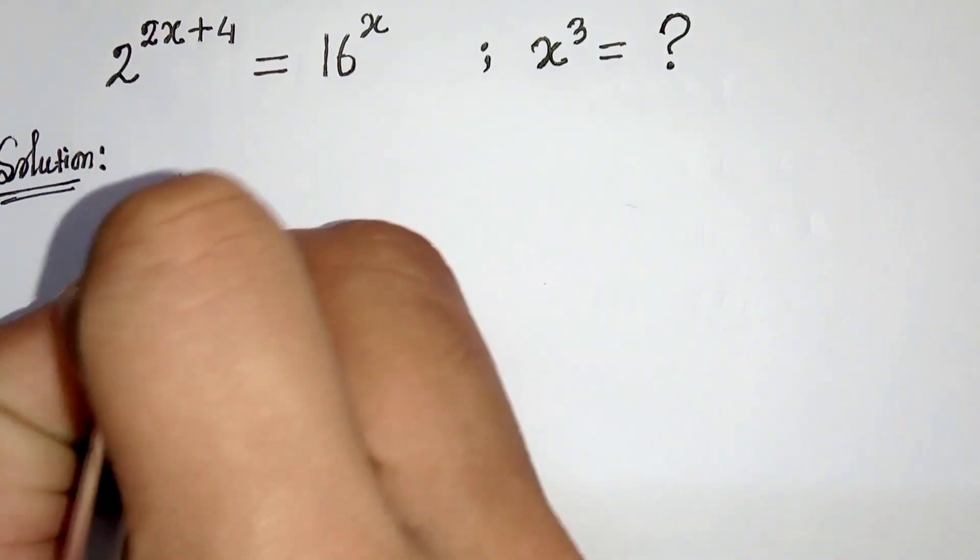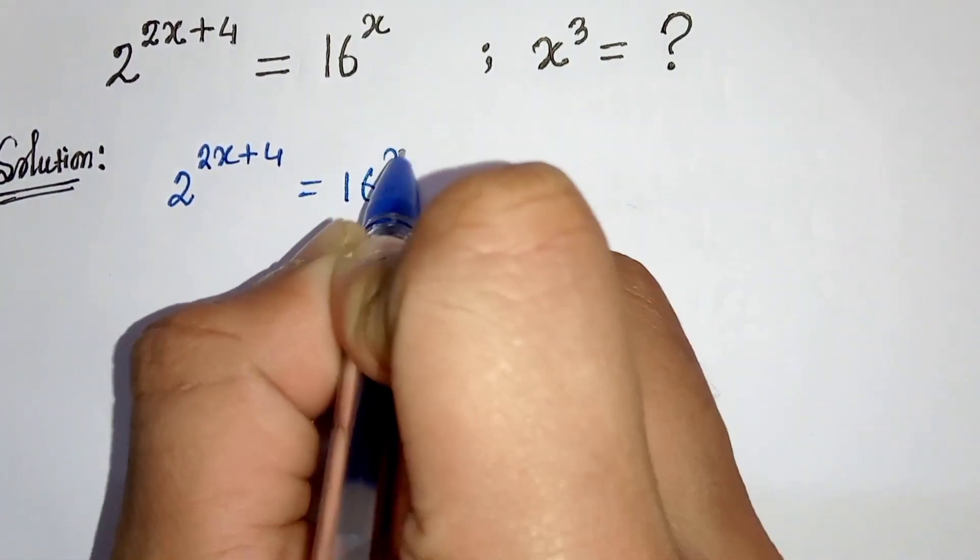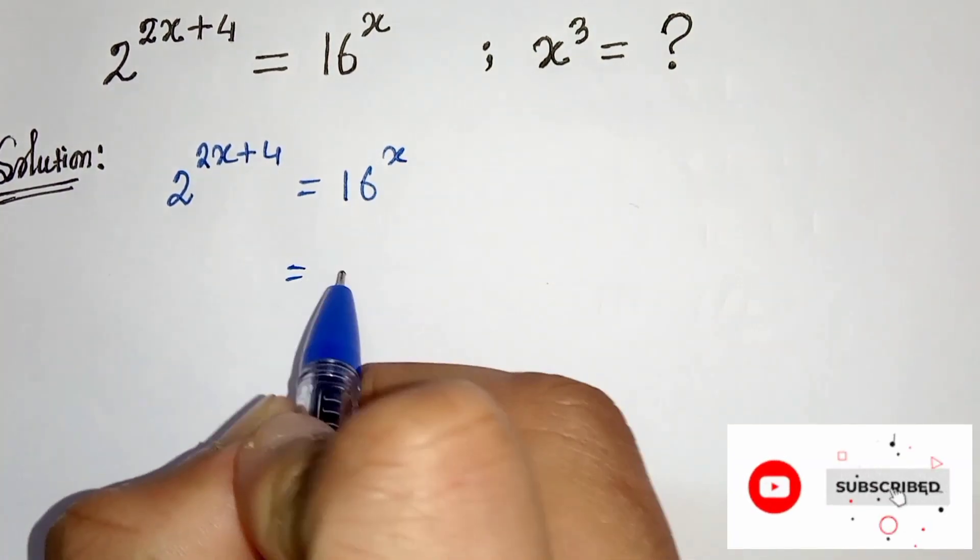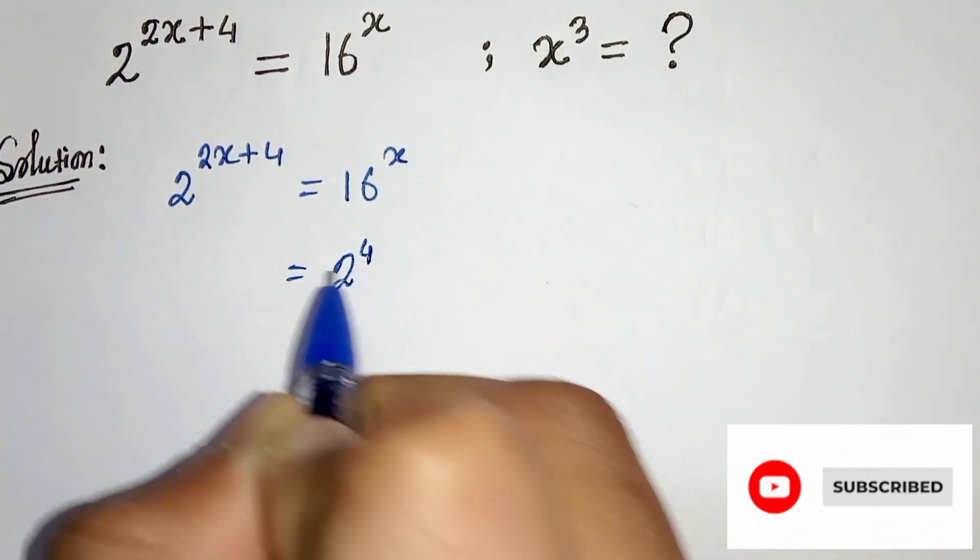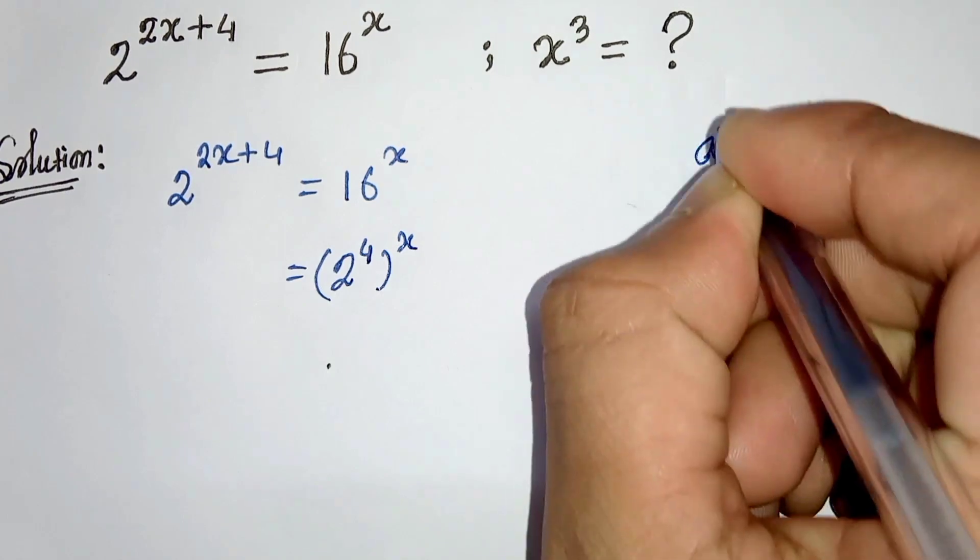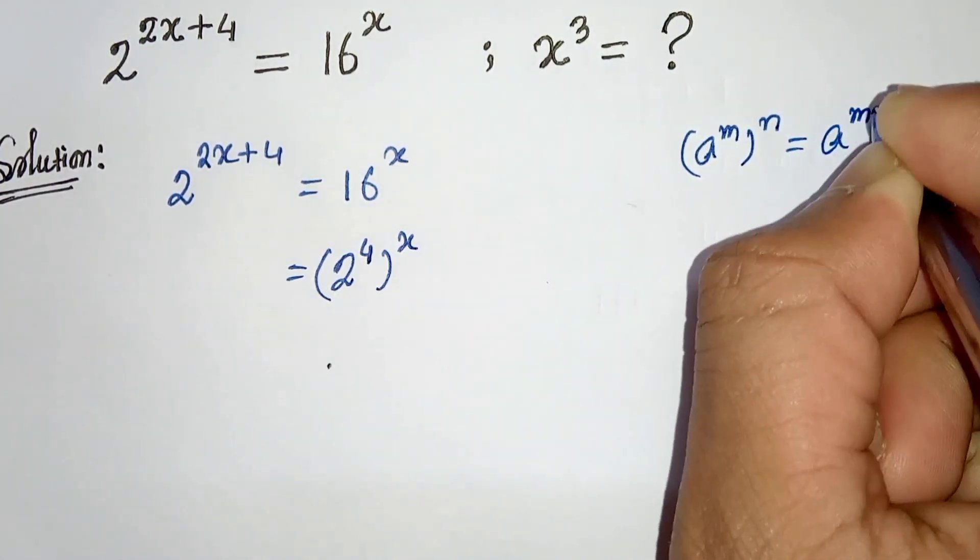So we are given 2 to the power 2x plus 4 is equals to 16 power x. Now we can write 16 power x as 2 to the power 4 whole power x, and we know that a to the power m whole power n can be written as a to the power m times n.